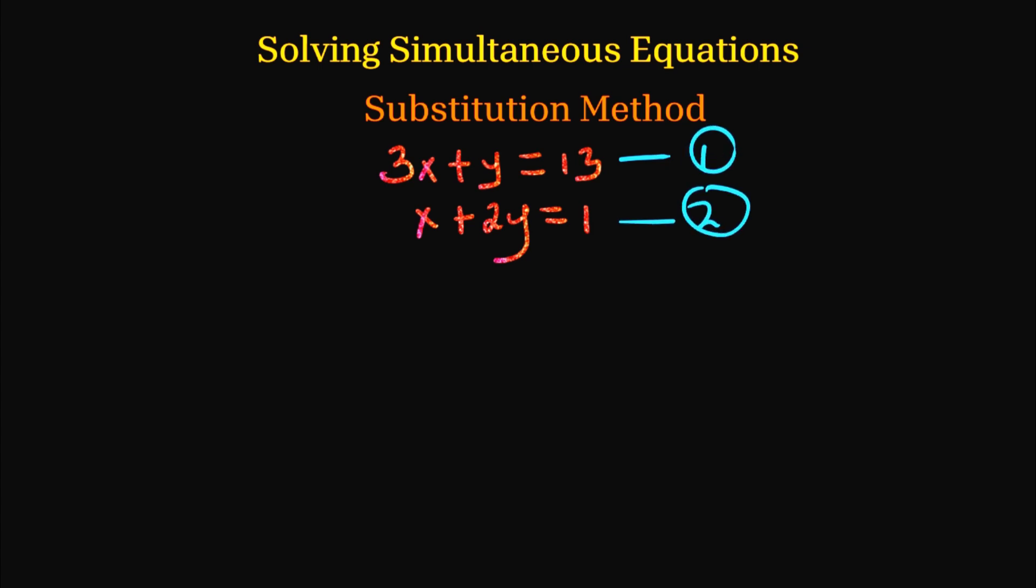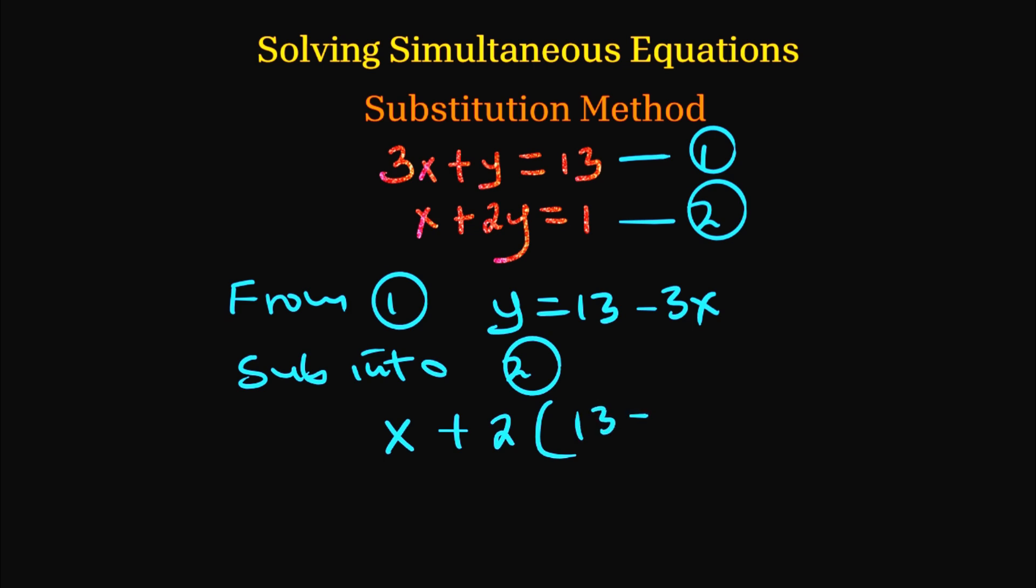So we're going to say that from equation 1, we can rewrite that as y equals 13 minus 3x. Then we now substitute into equation 2, so that wherever there is y, we write 13 minus 3x. So we're going to have x plus 2y, but y is 13 minus 3x, and that equals 1.